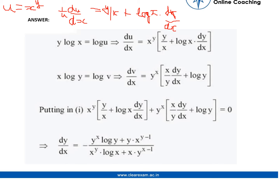When we differentiate u equals x to the power y, we first take log on both sides to get y log x equals log u. Then differentiating, we get 1 by u times du by dx equals y by x plus log x times dy by dx. Rearranging to get the value of du by dx, we get x^y multiplied by (y/x plus log x times dy by dx).